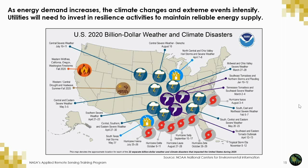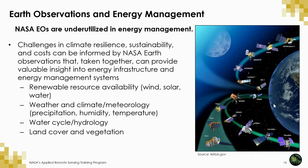Utilities and other energy management stakeholders will need to invest in resilience to maintain a reliable energy supply. Challenges in climate resilience, sustainability, and cost risks can be informed by NASA Earth observations. NASA data is underutilized in energy management but can provide valuable insight into energy infrastructure and management systems. NASA data can speak to renewable resource availability—including wind, solar, and water for hydropower—as well as weather and climate data such as hydrometeorological variables like precipitation, humidity, and temperature, water cycle hydrological parameters, and parameters on land cover and vegetation.